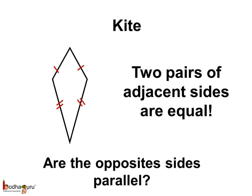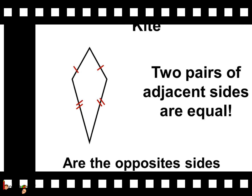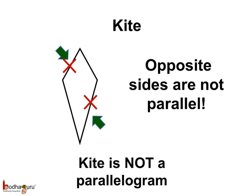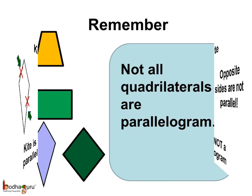This is another type of a quadrilateral. It has two pairs of adjacent sides equal, and this is called a kite. Is this a parallelogram? Let us see if the opposite sides are parallel in a kite. The opposite sides are not parallel. Hence, a kite is not a parallelogram.